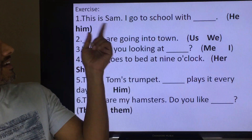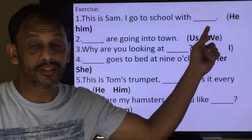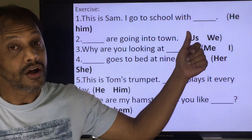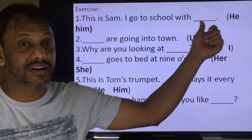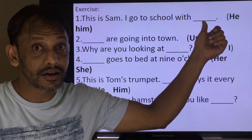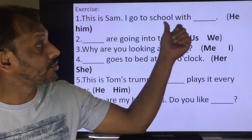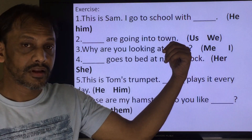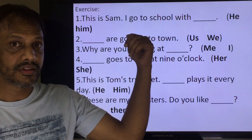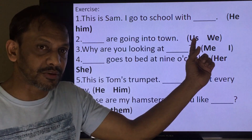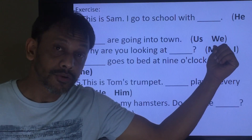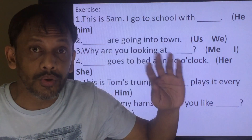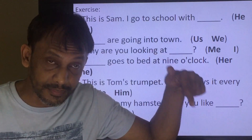Here are the exercises. This is Sam — 'I go to school with dash.' You have to fill in whether the blank is 'he' or 'him.' Can you say 'I go to school with he'? No. So we say 'I go to school with him' — we need an object pronoun here. Next: 'Dash are going into town.' The sentence is starting, so we need a subject pronoun — 'we' or 'us'? Of course, 'we.' We are going into town. There are four more sentences — write them down, try to understand them, and write your answers in the comment box.